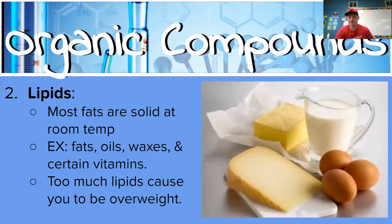Now we have lipids. Most fats are solid at room temperature. Examples include fats, oils, waxes, and certain vitamins — vitamin A, B, C, and E. Not vitamin D because you get that from the sun, which is obviously not solid. Too much lipids can cause you to become overweight. If you eat too much butter or too many oils in your foods, your body stores them differently. If you eat a lot of potato chips, which have a lot of oils, that's going to cause fat to accumulate on your body.